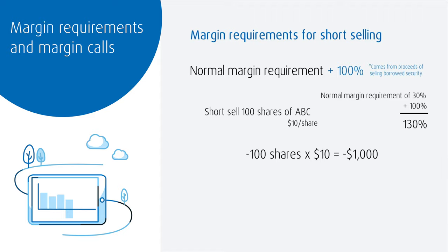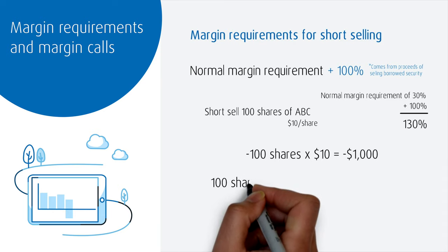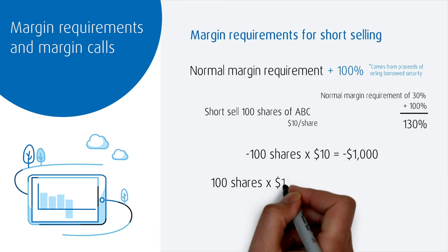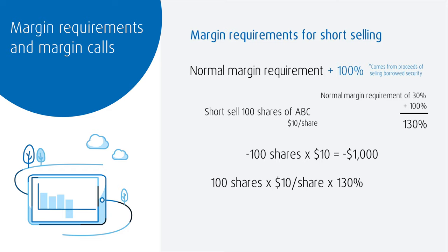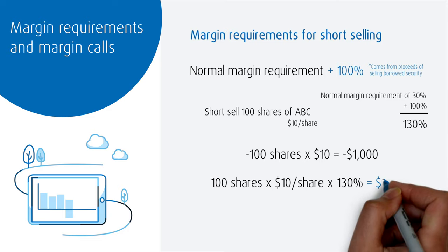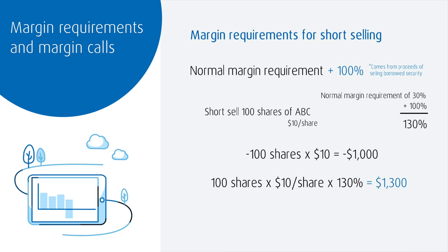The margin requirement to hold this short position is 100 shares times $10 per share times 130%, which equals $1,300. One final note about short-selling: if the stock you are shorting goes up in value, your losses could be substantial.